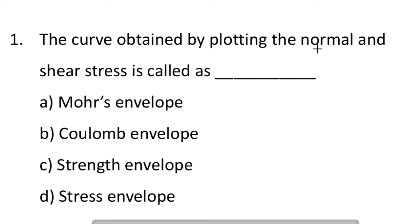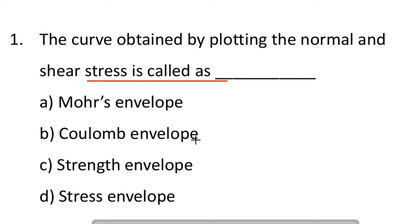The question is: the curve obtained by plotting the normal and shear stress is called. Option A: Moore envelope. Option B: Coulomb envelope. Option C: strength envelope. Option D: stress envelope. So the answer is C, strength envelope.